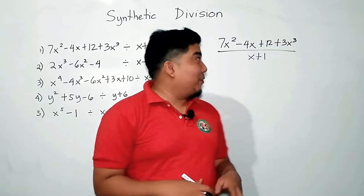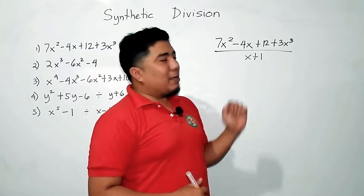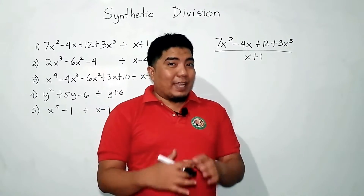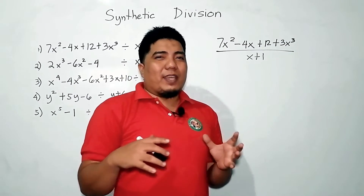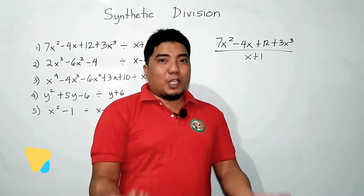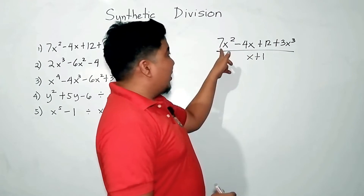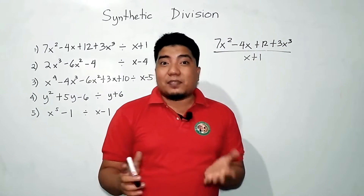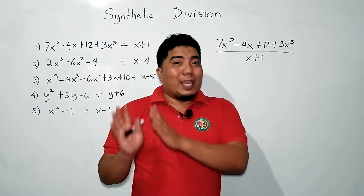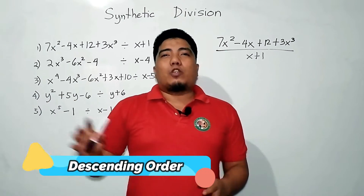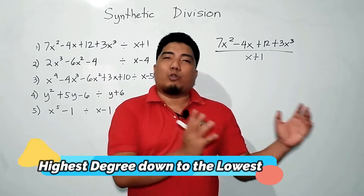For example, number 1: we have 7x² - 4x + 12 + 3x³ divided by x + 1. In synthetic division, what is very essential are the coefficients of each term. The coefficients here are 7, negative 4, 12, and positive 3. Remember that the terms should be in descending order — you need to arrange the expression from the highest degree down to the lowest degree.